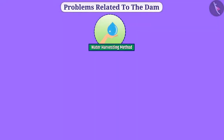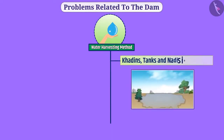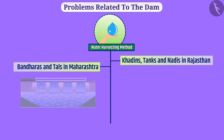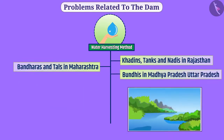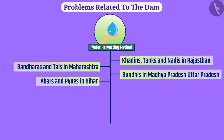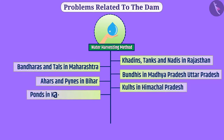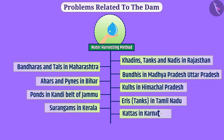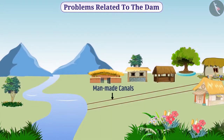There are also popular methods of water harvesting at various places: khadins, tanks, and nadis in Rajasthan; bandharas and tals in Maharashtra; bundis in Madhya Pradesh and Uttar Pradesh; ahars and pines in Bihar; kools in Himachal Pradesh; ponds in the Kandhi Belts of Jammu; eris (tanks) in Tamil Nadu; surangams in Kerala; and khattars in Karnataka. In these methods, man-made canals bring water to the village by changing the route of the river, supplying water to the village.